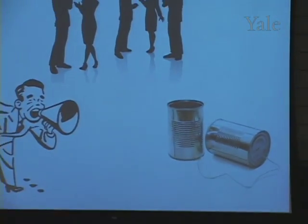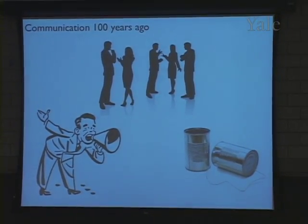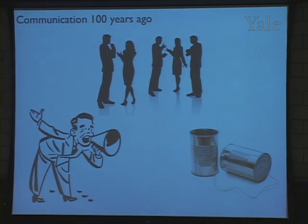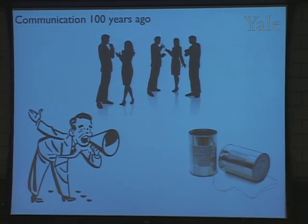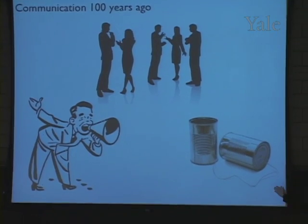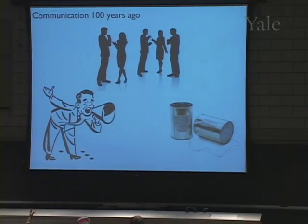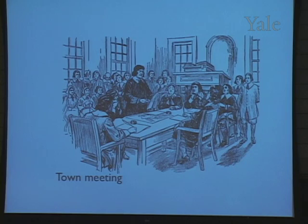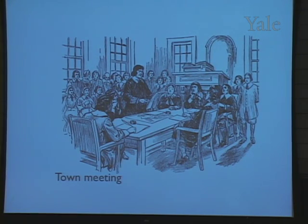So first of all, if we wanted to communicate between one person and another person 100 years ago, we didn't have all these gadgets and toys. What did we have? What did we use? Telegraph. Morse code. How about voice? Megaphone. Yes, yes. I have a picture of those. Right there, right? So we had to use our voice, maybe a megaphone, or one of these toys if you want to communicate long distance.